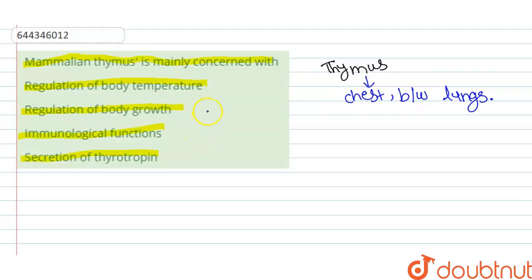Now let's talk about the options. Option A is regulation of body temperature. Regulation of body temperature is maintained by sweat glands and skin, which means this option is incorrect.